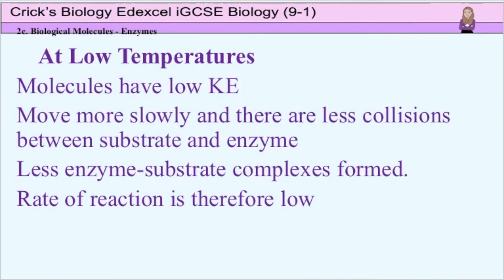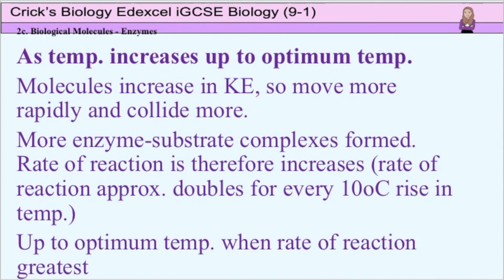Let's now look at why we ended up with these rates of reaction. At low temperatures, such as 0 degrees C, the molecules — the substrate and the enzymes — have low kinetic energy, which means they move around more slowly, so they are less likely to bump into each other. There are fewer collisions between the substrate and the enzyme, therefore fewer enzyme-substrate complexes are formed, and the rate of reaction is low. As temperatures increase, the molecules increase in kinetic energy, so they move around more rapidly and collide more often, therefore more enzyme-substrate complexes form and the rate of reaction increases. The rate of reaction approximately doubles for every 10 degrees C rise in temperature.